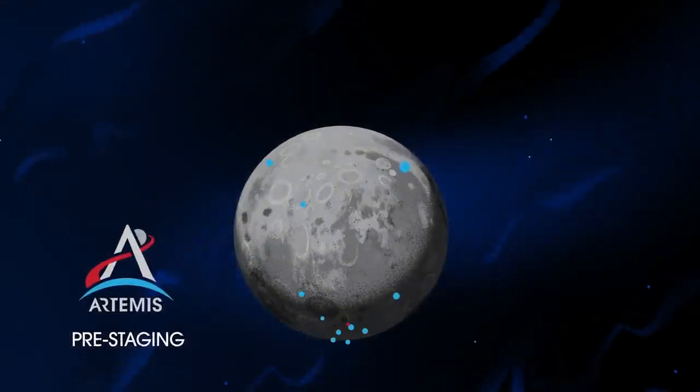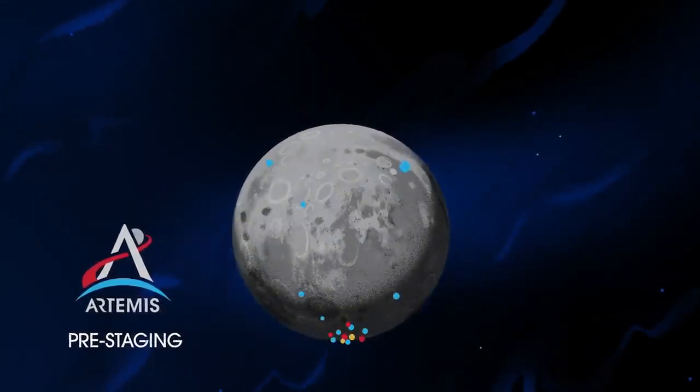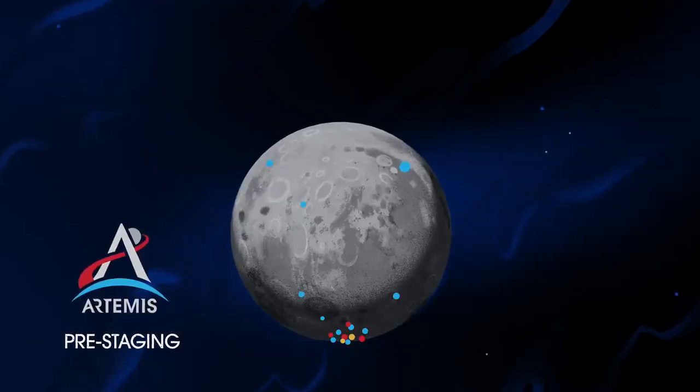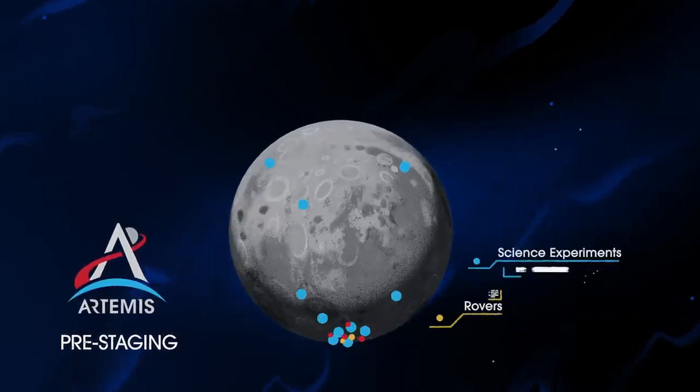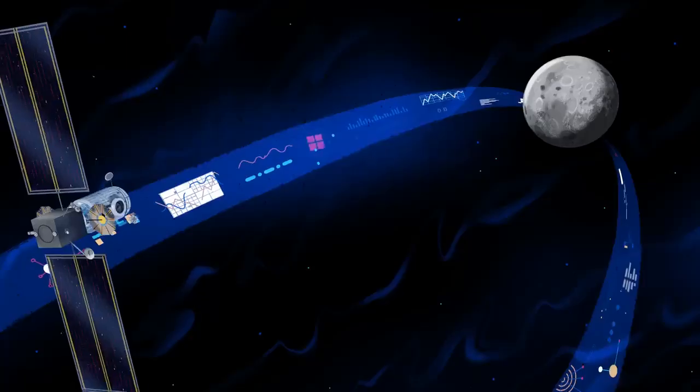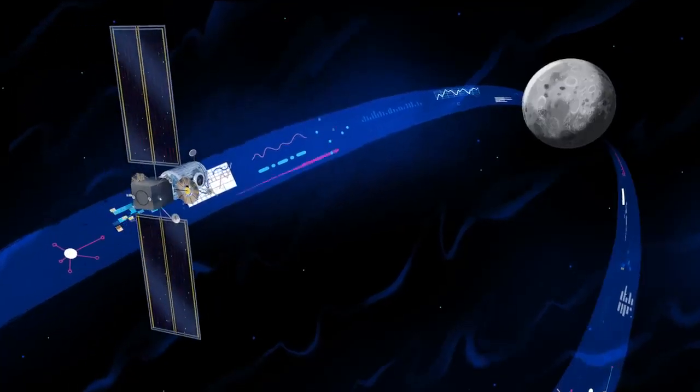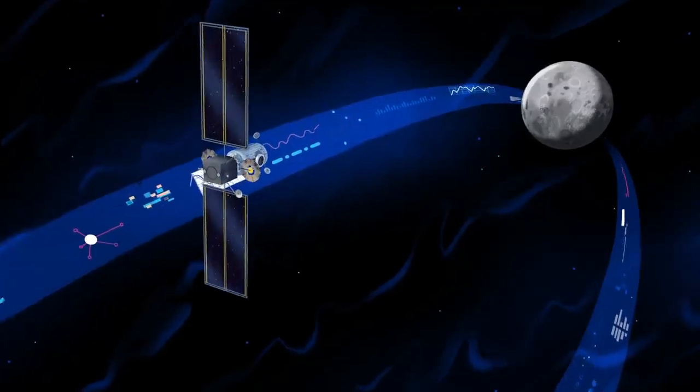Everything needed for lunar missions will be positioned in advance by commercial and international partners. This includes rovers, science experiments, and human-rated systems on the surface. But it also includes a dedicated lunar station in orbit around the Moon called Gateway.